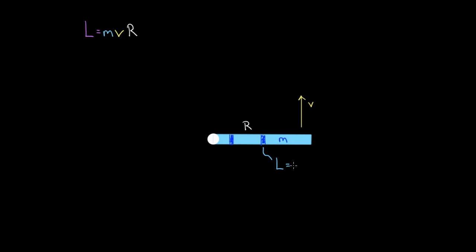The angular momentum of a small piece of the object — call it piece one — would be M₁V₁R₁: the mass of that piece, times its speed, times its radius. For piece two, you'd get M₂V₂R₂. Keep in mind that these speeds are all different: the outside edge moves fastest, pieces closer to the middle move slower, because they trace out smaller circles in the same amount of time as the outer pieces trace out larger circles.